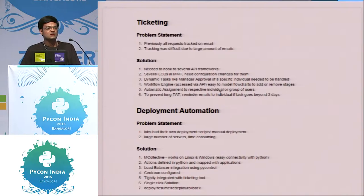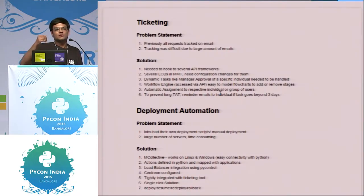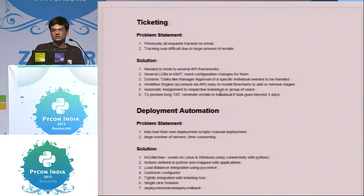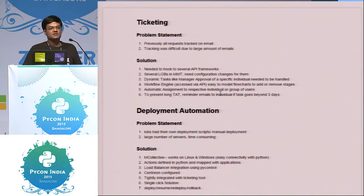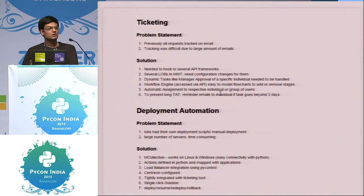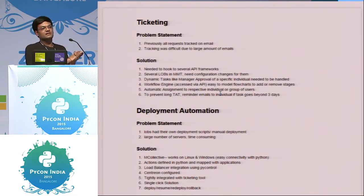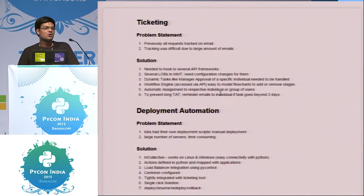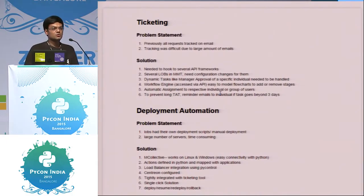We had dynamic approval stages — we don't have fixed assignment stages. If I raise a request, it doesn't go to a specific person; it might go to a manager of a specific individual. We also had to create a workflow engine so that every time an approval stage was added, we didn't need to make changes in the code itself. We needed a flowchart-kind of system so changes in the flowchart get reflected on the UI. Automatic assignment to the respective individual means they can view tickets assigned to them on a dashboard and take action. And since everything was previously tracked on email, a request would typically go pending for a week, so we set up an automated mailer for long turnaround times.